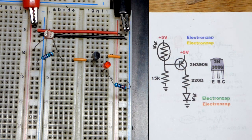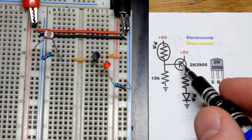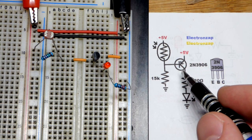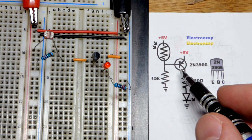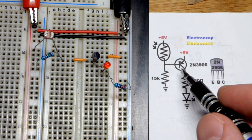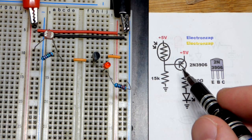The way we have this PNP bipolar junction transistor wired up, I made a similar video with an NPN. I didn't review it though, there's probably differences.